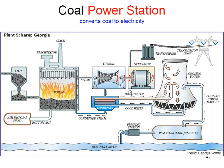Some moisture escapes to the atmosphere and is compensated by makeup water from a lake or reservoir. To summarize, today we discussed cooling with dehumidification, cooling with humidification, heating with humidification, heating with dehumidification, adiabatic saturation process, evaporative cooling, adiabatic mixing of two air streams, and cooling towers. In the next video, we will discuss the four types of air conditioning systems. Thank you.